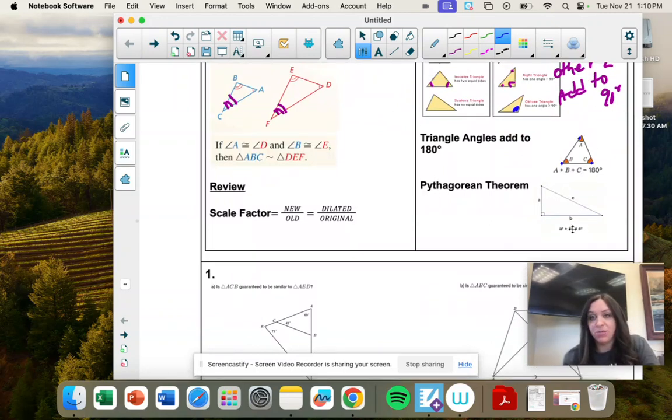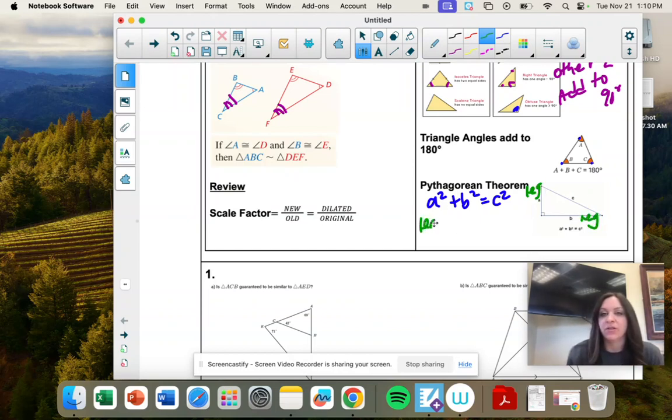And then there is a couple questions where you have to use the Pythagorean theorem. So that's a squared plus b squared equals c squared, where a and b, we call those the legs. They're the two sides that make that 90 degree angle. So you take the leg squared and the leg squared, and that equals c squared. And c is across from the right angle. And it's the hypotenuse.